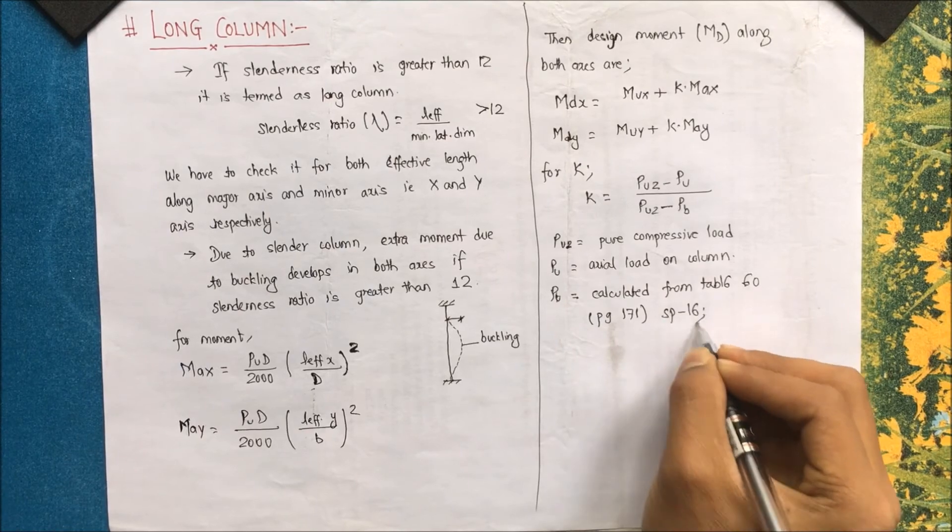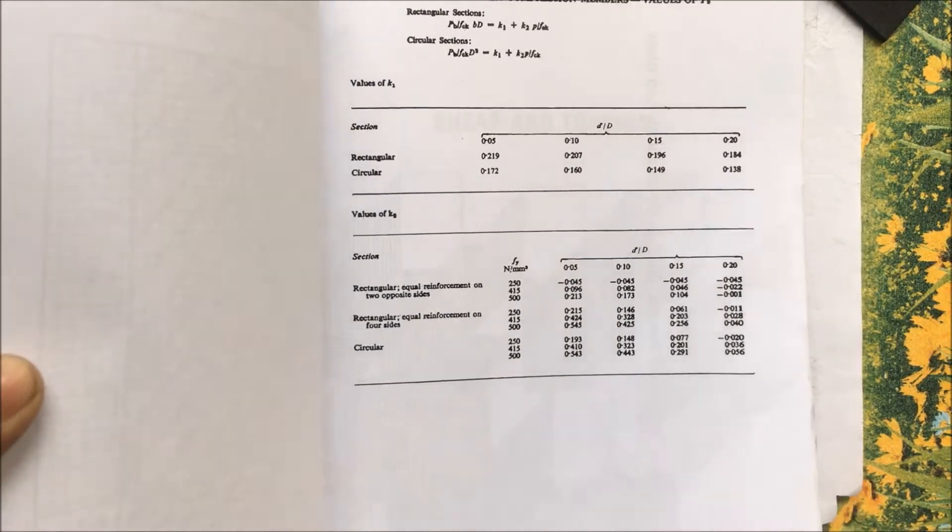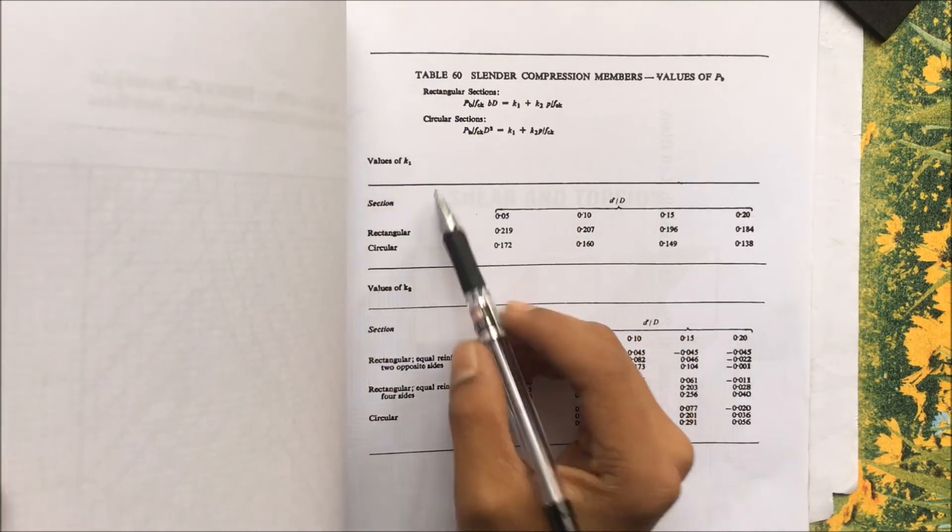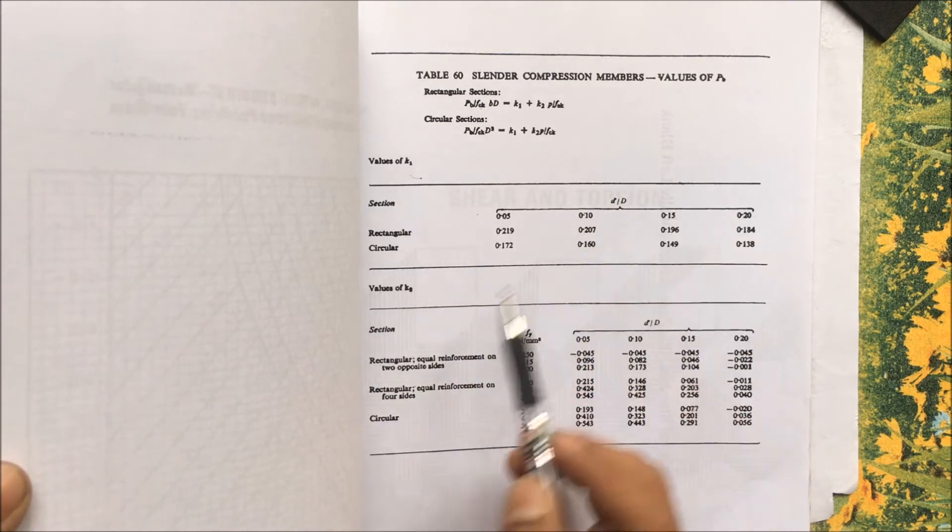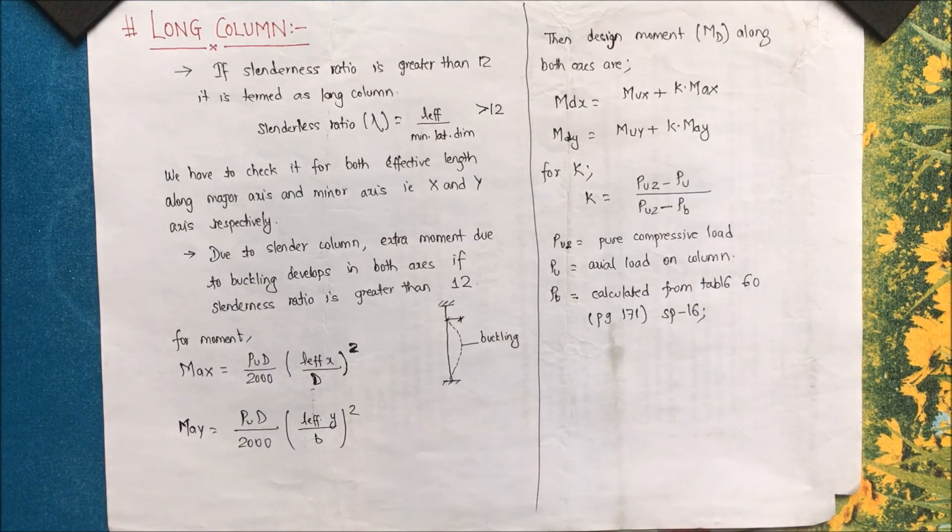So you can see here, as I said in the code, page number 171, slender compression member. Now you have the term there for circular and rectangular and the value of k1 and k2 can be determined.